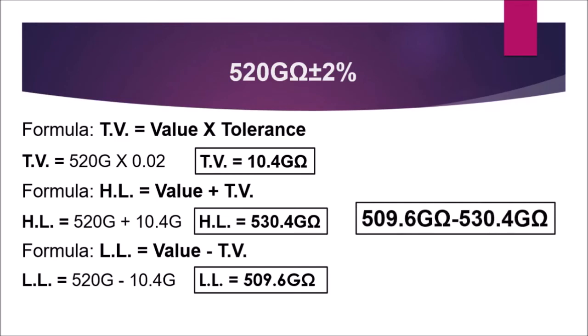The lower limit is 509.6 giga-ohms and the higher limit is 530.4 giga-ohms, giving a range of 509.6 to 530.4 giga-ohms. This is the basis for determining if the 520-giga-ohm resistor can be used or needs replacement. If the measurement is beyond this range, the resistor is out of tolerance and needs to be replaced. If it's within the range, the resistor is good.